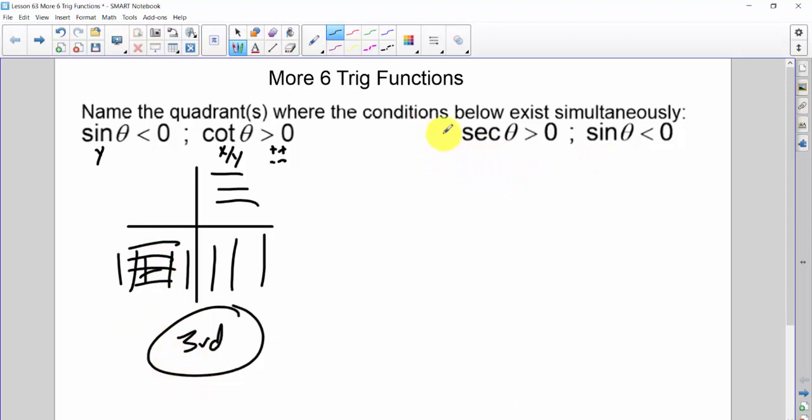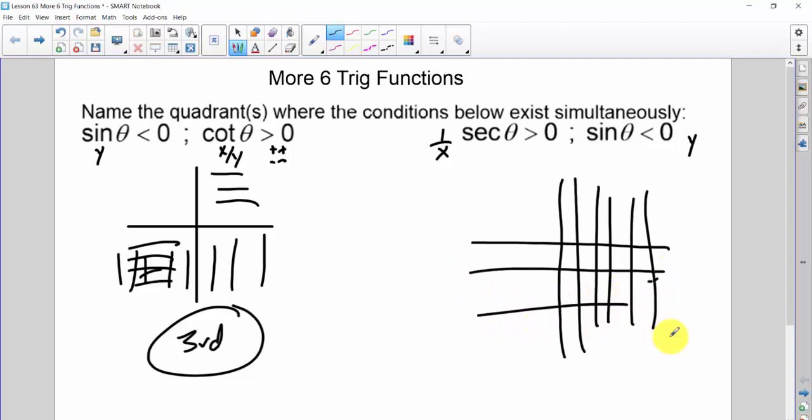Likewise, in this case, a secant is 1 over an x, so we're just basically looking at the x value, and the sine, again, is the y. So again, I will draw an axis, say where is the x greater than zero? That's here. And where is the y less than zero? We've done that one already. That's here. Answer fourth quadrant.